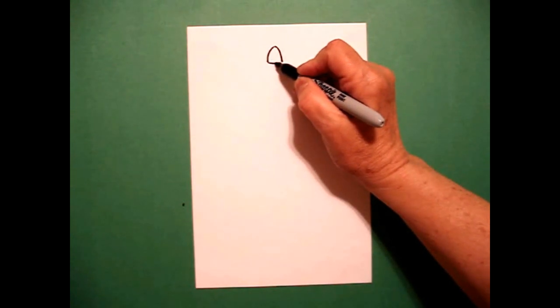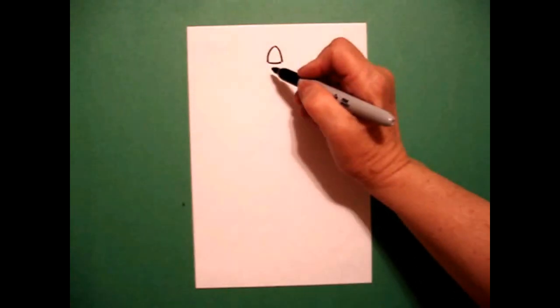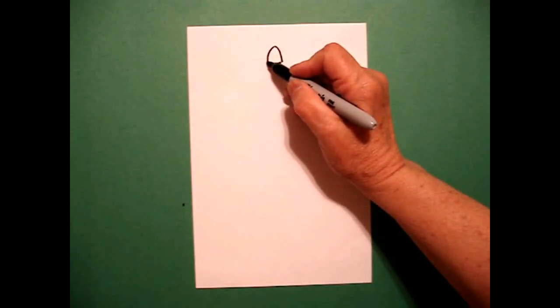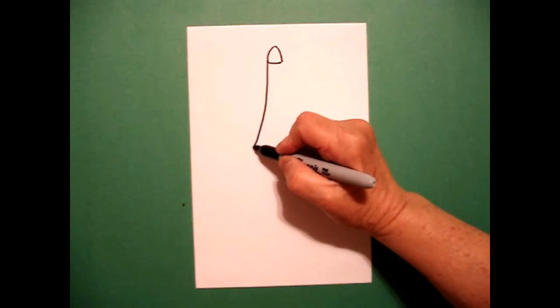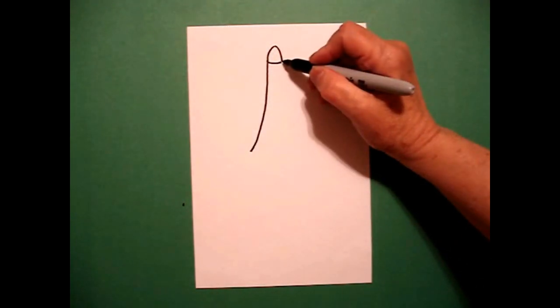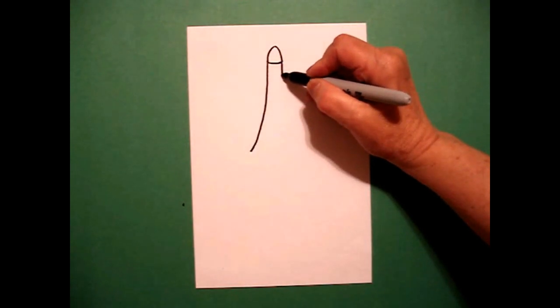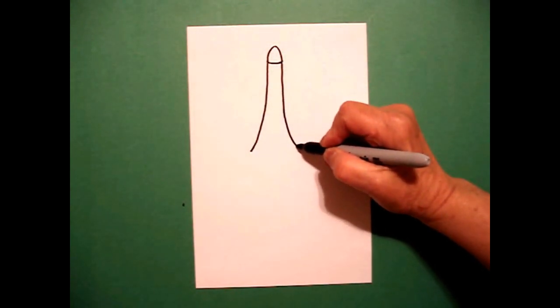I'm going to go back to the left and connect the two. On the left hand side, I'm going to draw a straight line, curve line down. On the right hand side, I'm going to draw a straight line, curve line down.